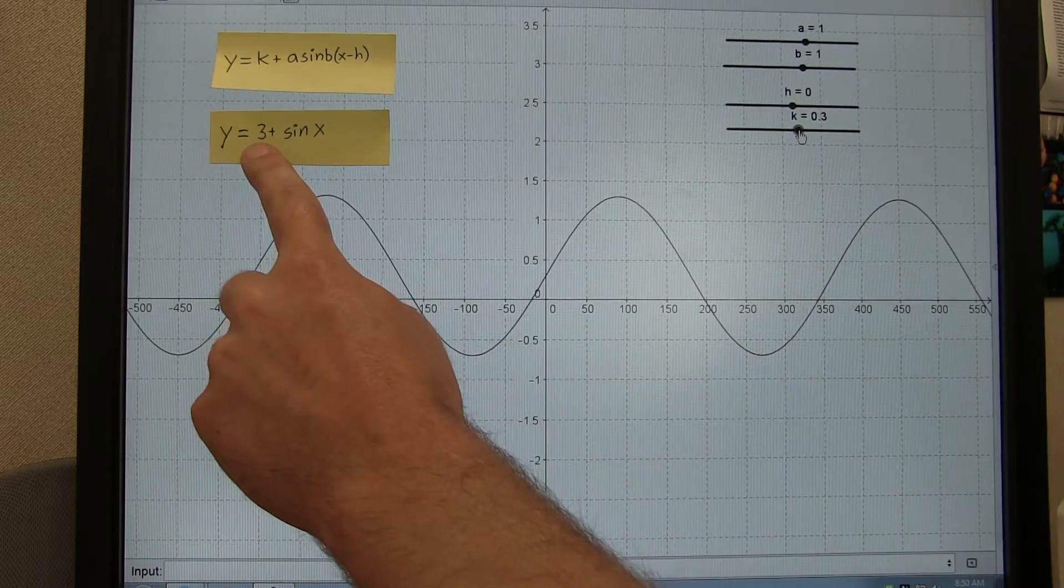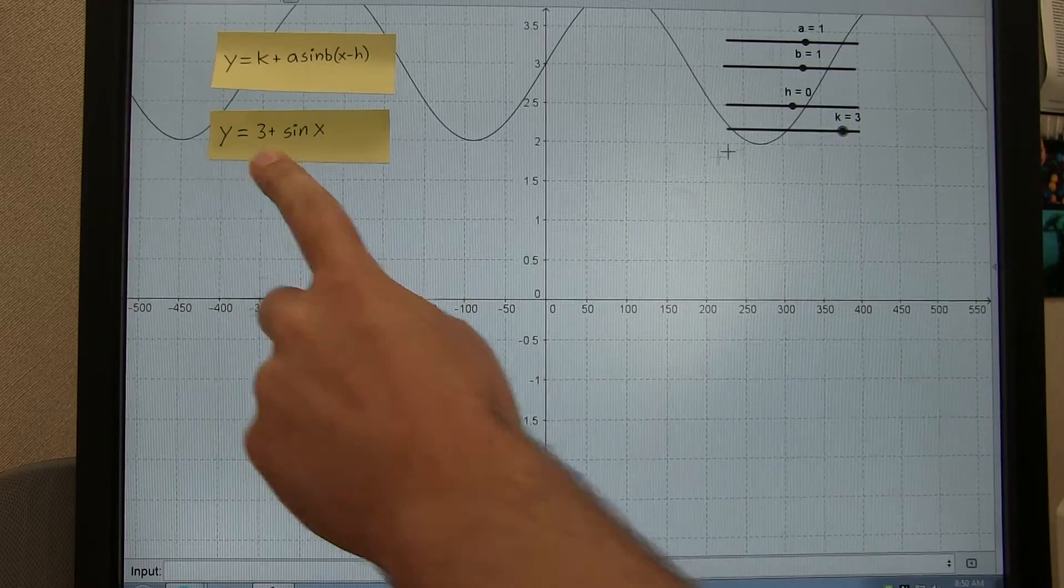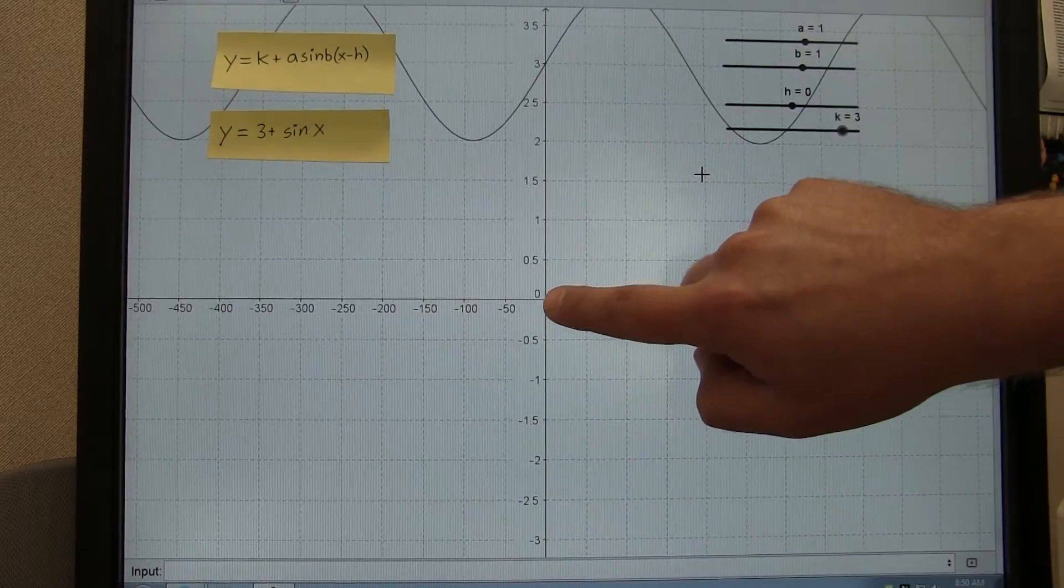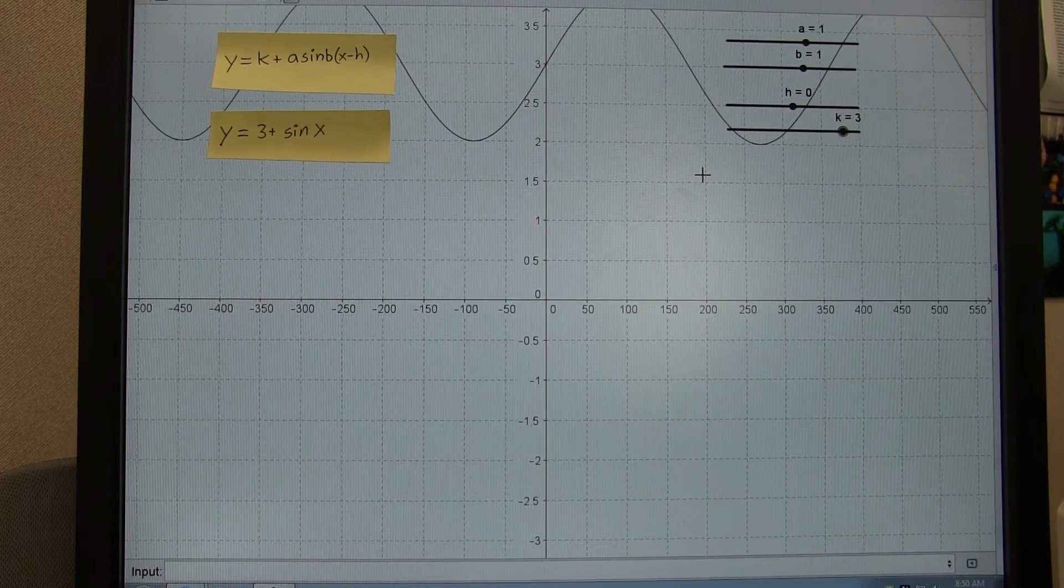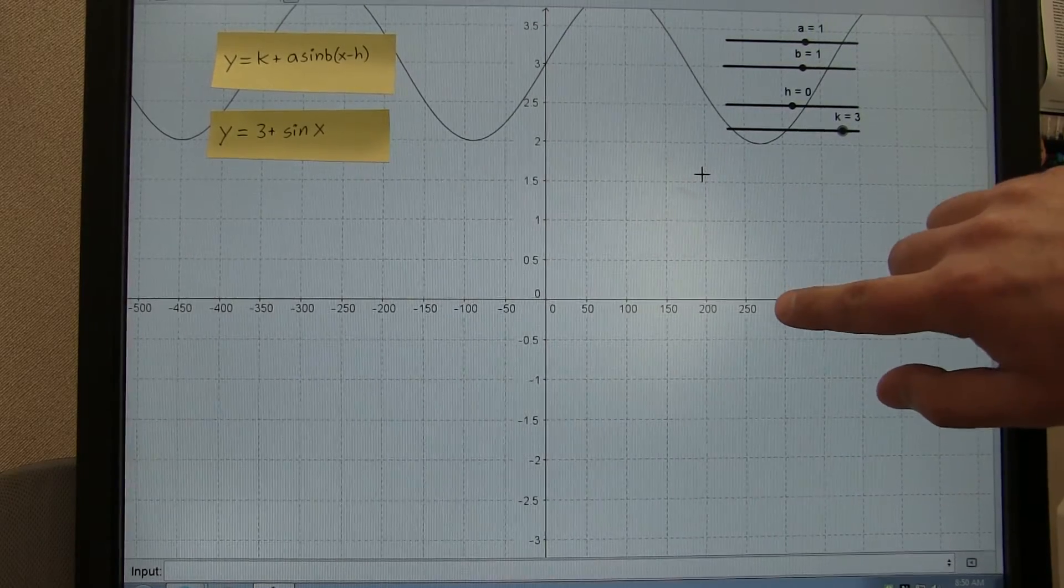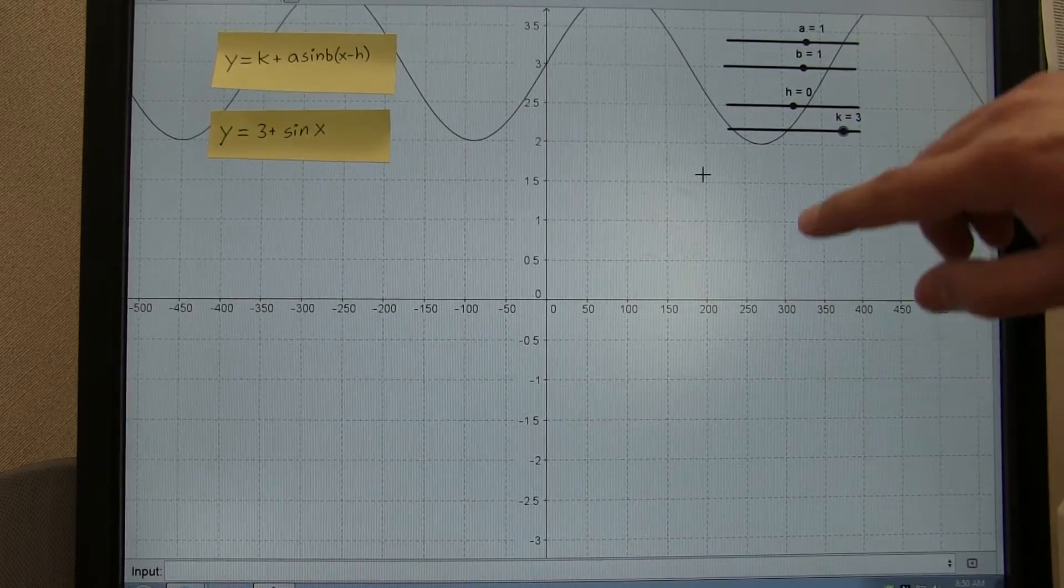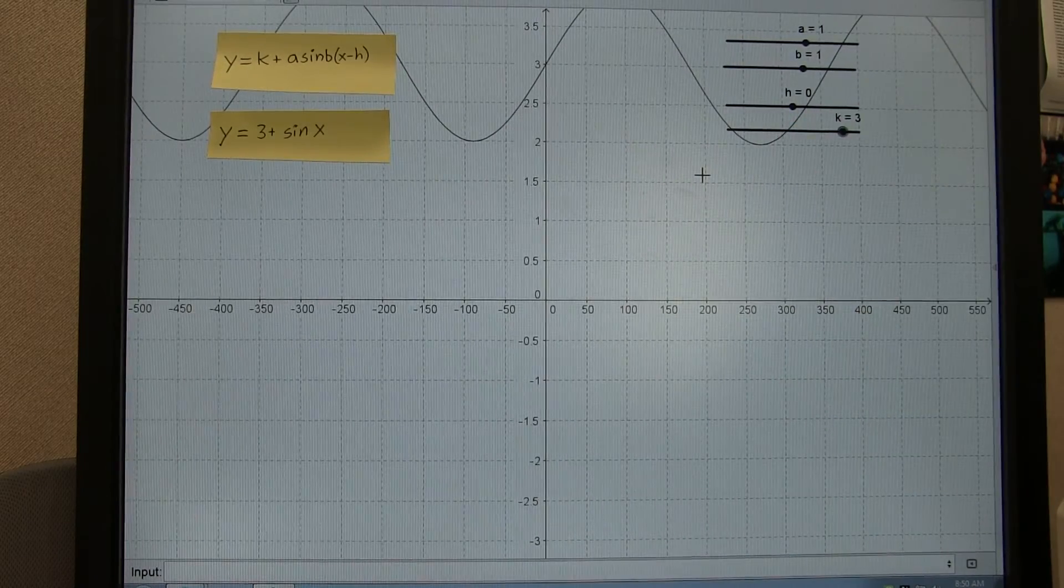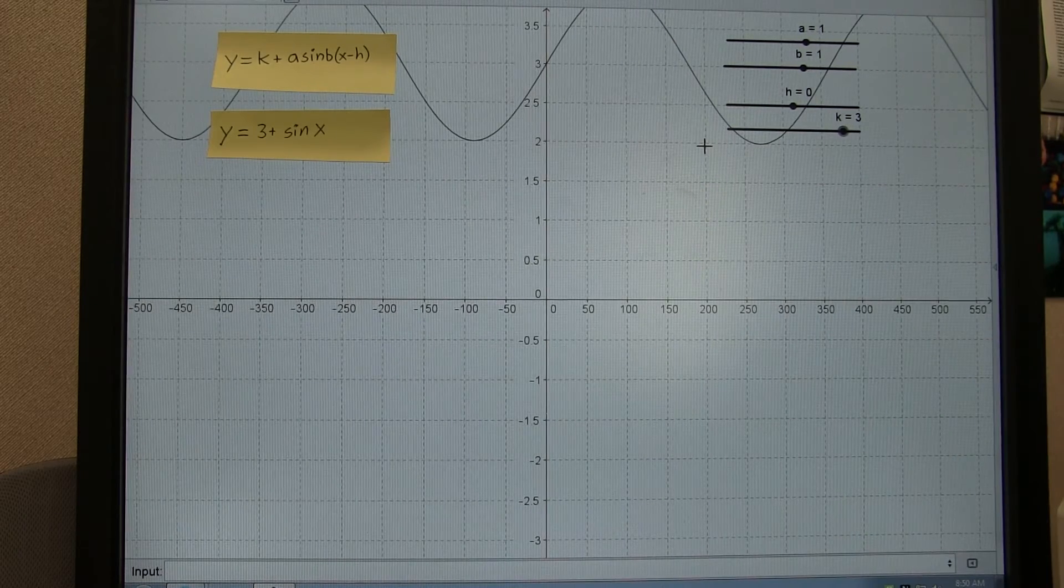Right here, if K is 3, if we change this to 3, now that point that was a 0, 0 is now way up here at 0, 3. And our minimum point that was at 270, negative 1 is now at 272. It shifted every single point on the graph vertically 3.